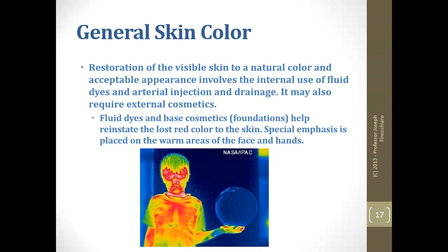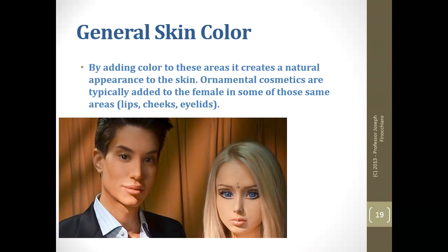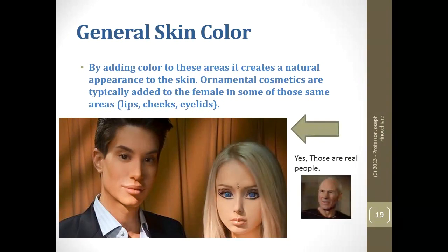We place special emphasis on warm areas — where red pigment is most noticed. These are the lips, cheeks, and similar areas. By adding color to those areas it creates a natural appearance, so even though we embalm the body we might need to put a little extra red on the lips or hands. Ornamental cosmetics are typically added for females. It's not just enough to put lipstick on — you might need an underlying pinkish-red tone to replace the lost blood, then put the lipstick on as an ornamental cosmetic.